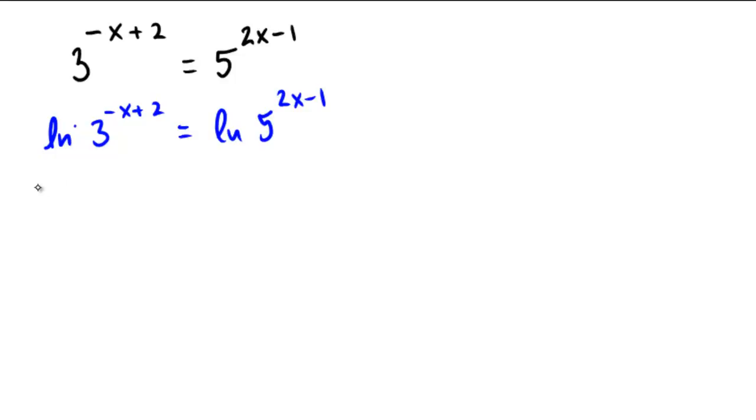Pull the exponent. Negative x plus 2 ln 3 equals 2x minus 1 ln 5.